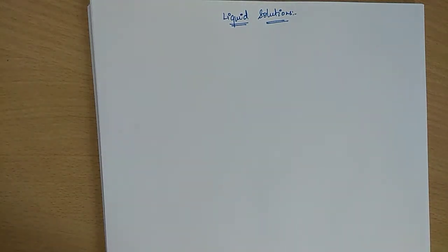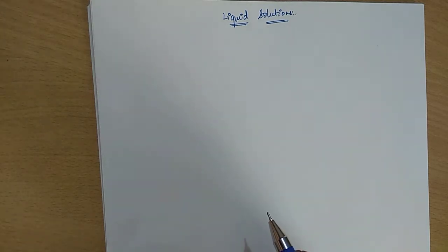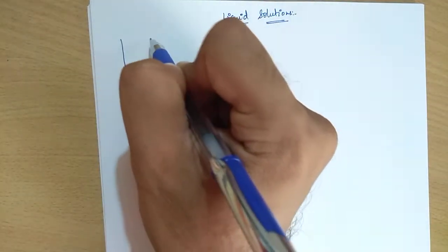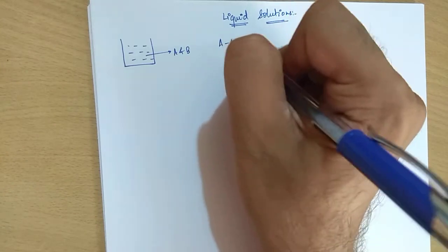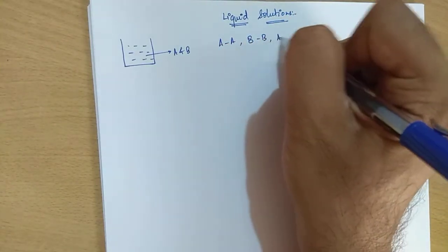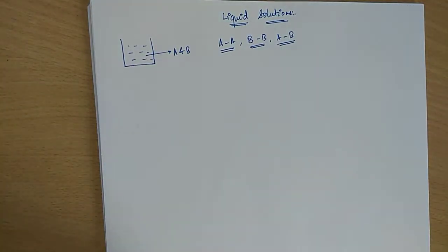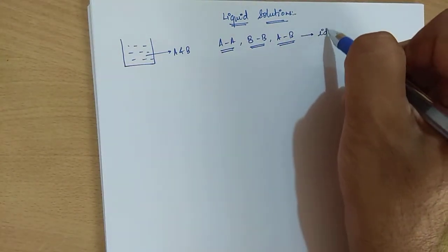Hello students, in this video we will continue further with liquid solutions. So up till now, whatever discussions we have done, we have done only on the basis of ideal solutions, and ideal solutions follow Raoult's law. We defined ideal solutions as a mixture which has two components A and B, where the interactions between A-A and B-B are almost equal to A-B interactions.